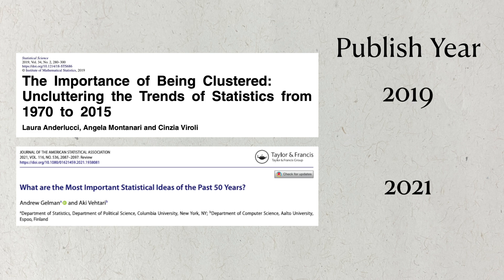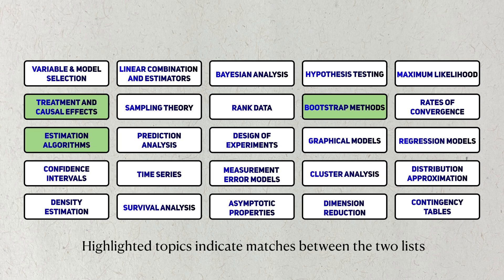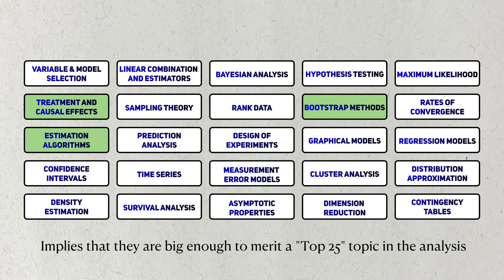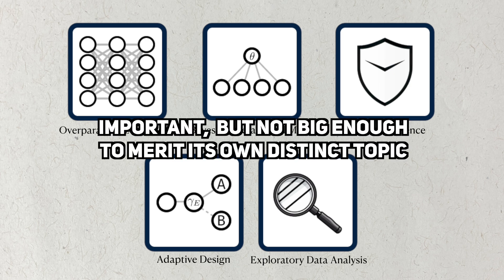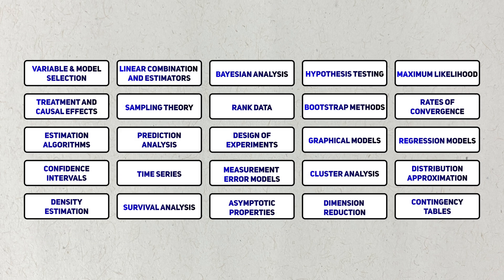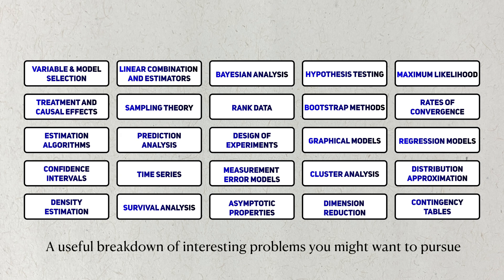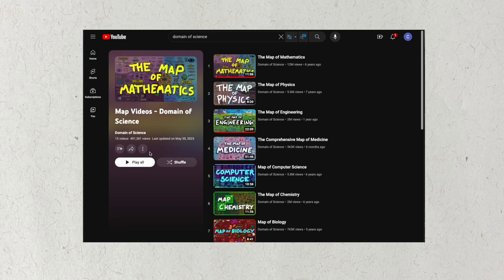This paper was actually published two years before the famous list created by Andrew Gelman and Aki Vitari. One of the main reasons I wanted to read this paper was to know how topics selected by a statistical analysis compare to a more curated list. Just going off the lists alone, this analysis captures three of the items from the Gelman-Vitari list: bootstrap, general computation algorithms, and causal inference. These topics were large enough to merit being one of the paper's 25 leading groups. The other topics from the Gelman-Vitari list, even though important, weren't large enough to be their own group. The authors themselves note that some popular research areas, such as robust estimation, do not have their own groups and were probably absorbed into others.